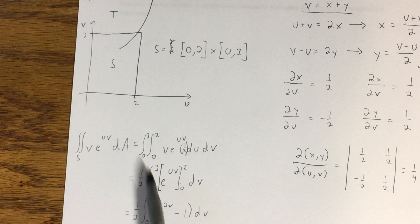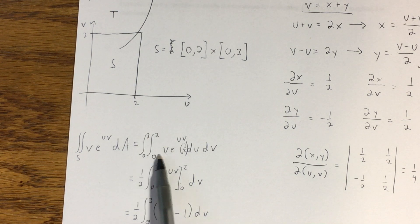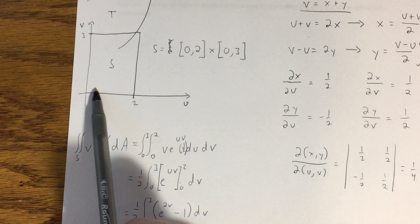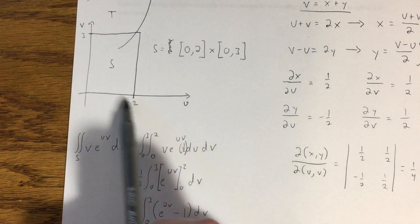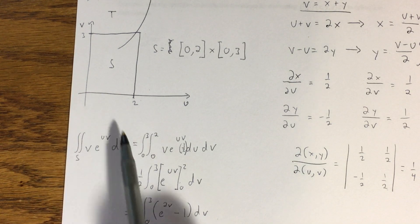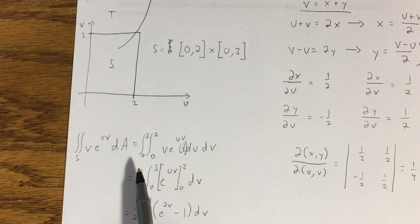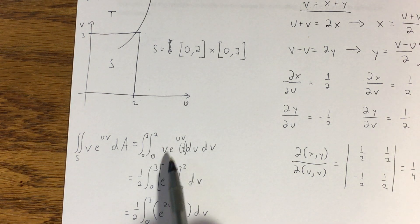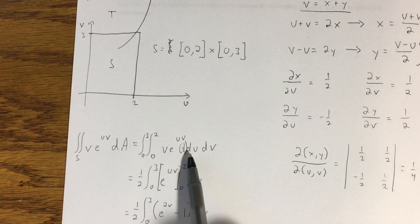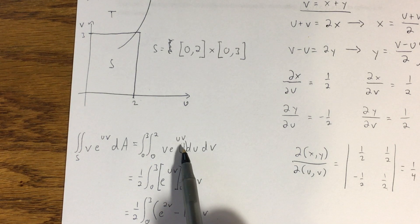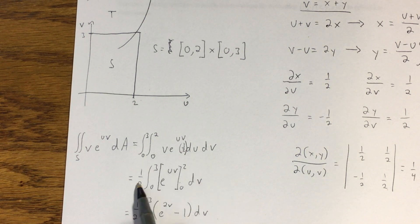I'm going to bring the 1 half out and notice the iterated integral that we ended up with. Because S is a nice rectangle where the sides are parallel to my U and V axes, I can set up an iterated integral as we did in section 15.1. So to integrate this, we're going to integrate with respect to U first. Remember by Fubini's theorem, we can do it in either order. It's easier if we integrate with respect to U first, however. I also brought the 1 half that we got from our Jacobian out.